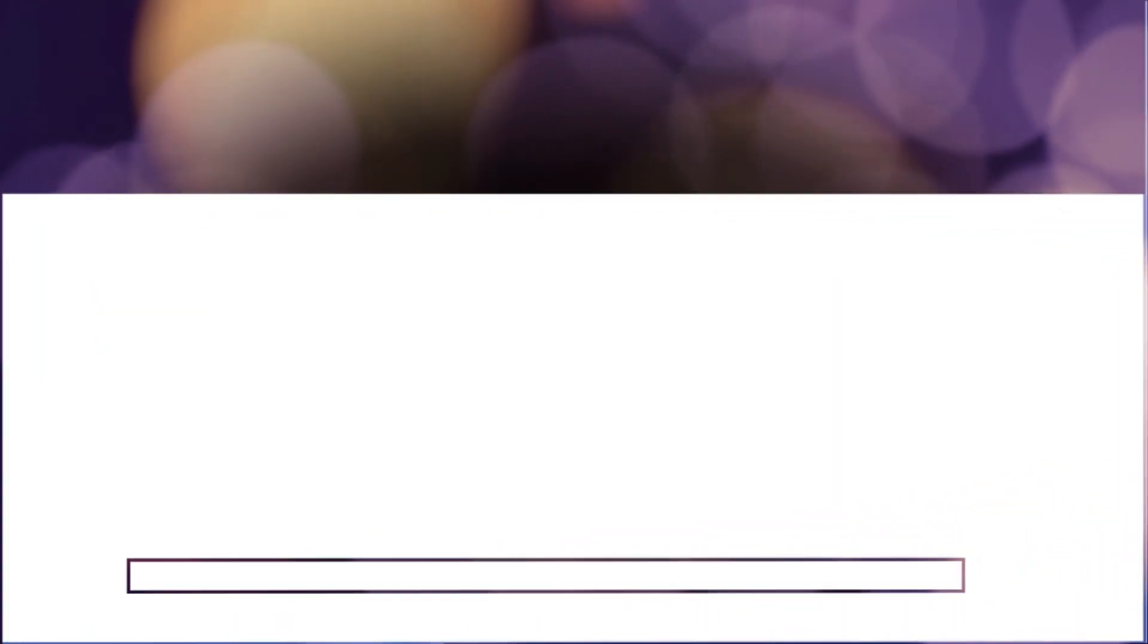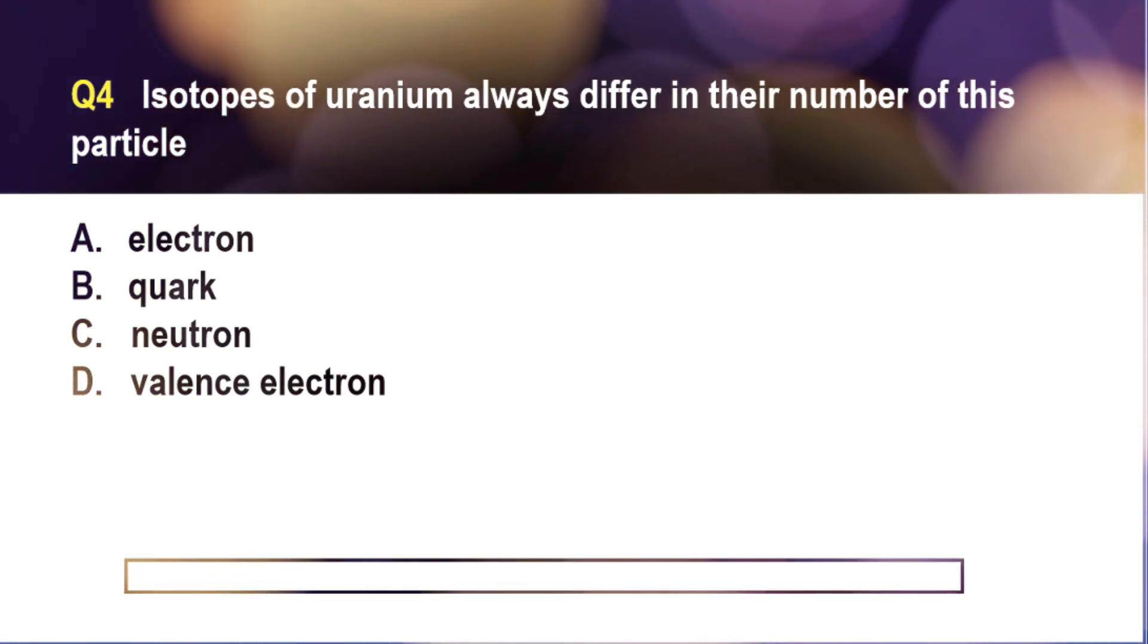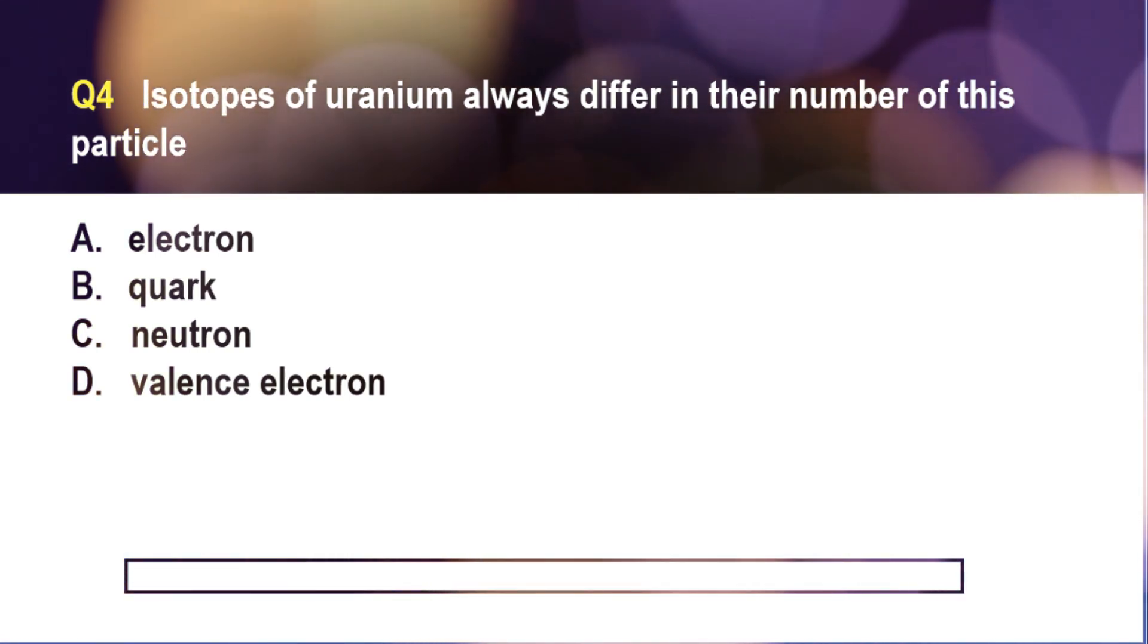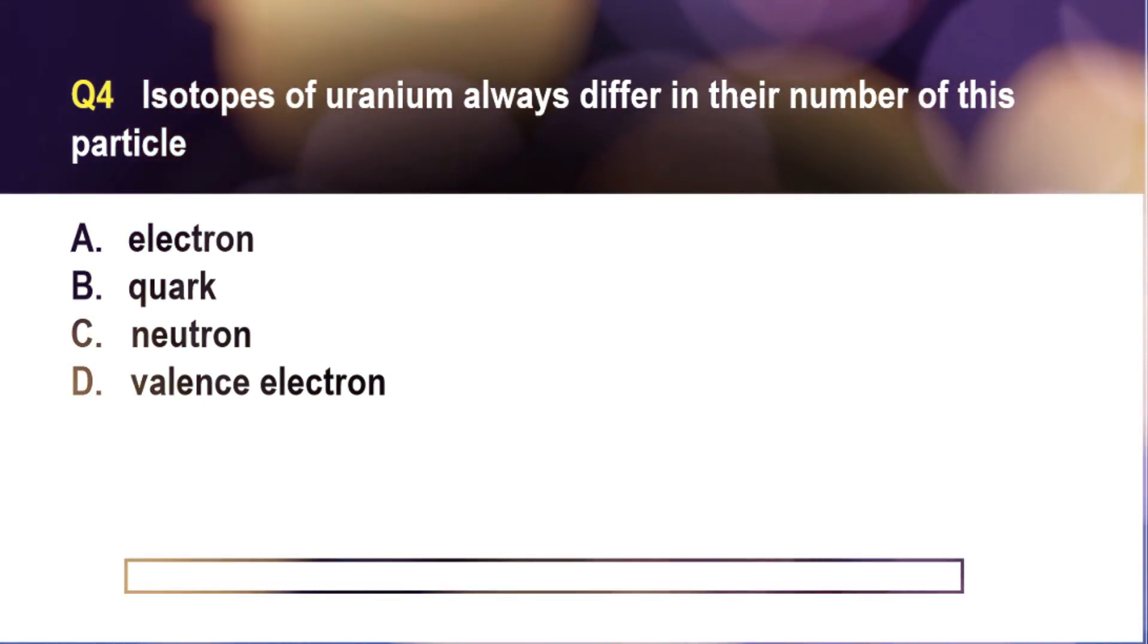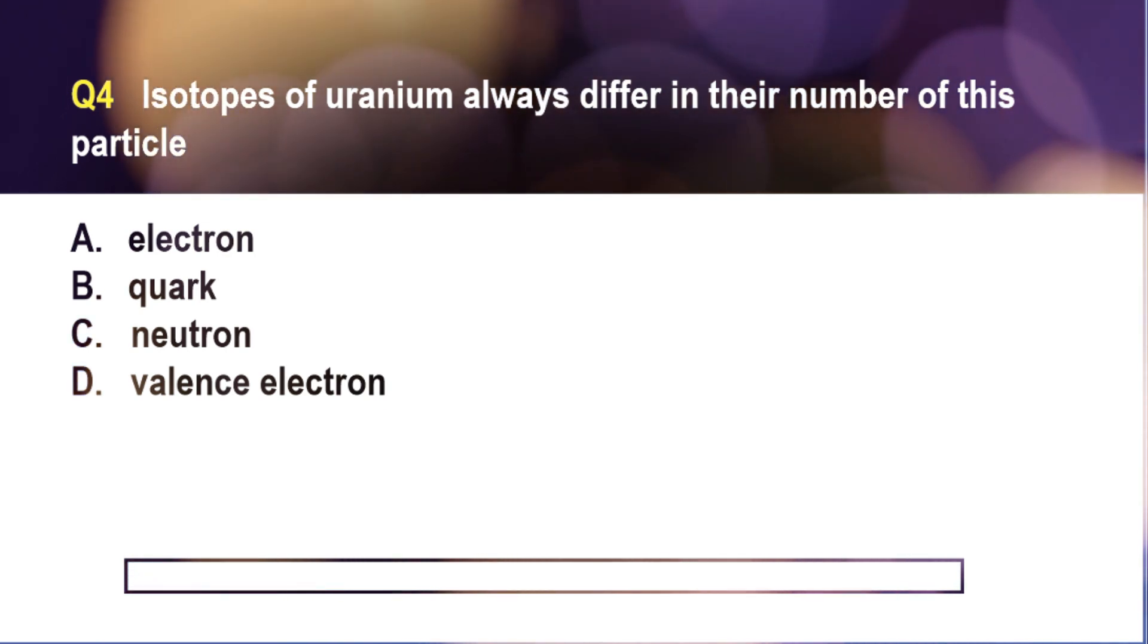Isotopes of the element uranium always differ in their number of this particle. A. Electron, B. Quark, C. Neutron, D. Valence electron.